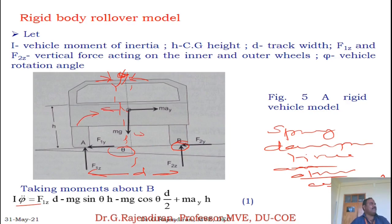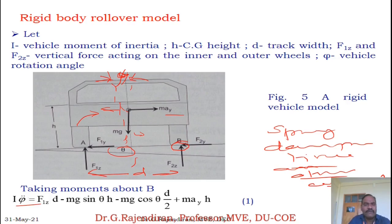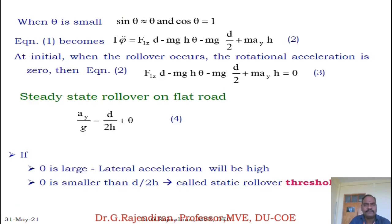The acceleration force is mass into lateral acceleration Ay, acting at height H from the ground. For small theta, sine theta equals theta and cos theta equals 1, so the equation becomes: F1Z·D minus MG·H·theta minus MG·(D/2) minus MA·H. At the initial point when vehicle turnover occurs, the rotational acceleration phi double dot equals zero.